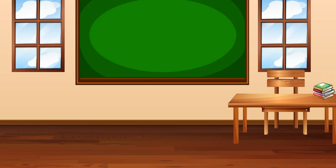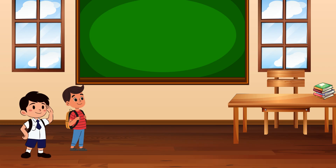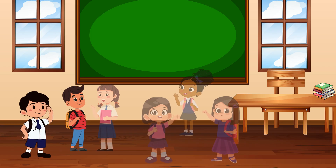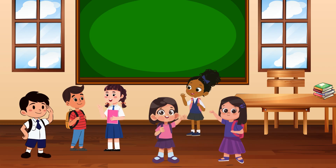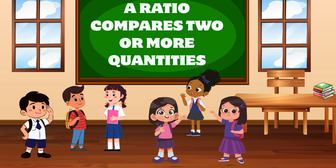In this classroom, there are two boys and four girls. Let's compare them using something powerful: ratios. A ratio compares two or more quantities. It's like saying how many of this compared to that.